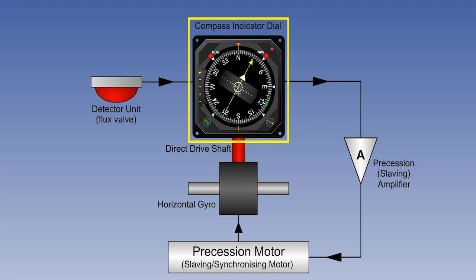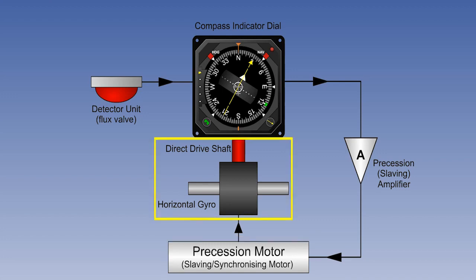A compass indicator dial, this is what most people refer to as the compass. A precession amplifier, also known as a slaving amplifier. A precession motor, also known as a slaving or synchronising motor. And a horizontal gyro, similar in principle to the one used in the DGI.